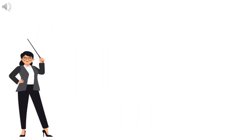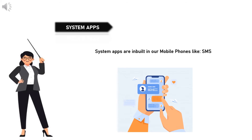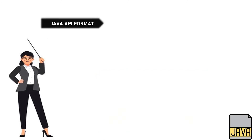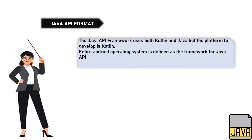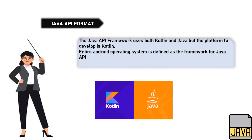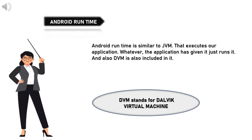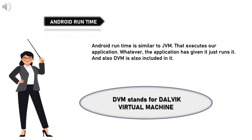System apps are inbuilt in our mobile phones, like SMS. User apps are apps we generally download from the App Store. The Java API framework uses both Kotlin and Java, but the primary platform to develop is Kotlin; the entire Android operating system is defined as the framework for Java API. Android runtime is similar to JVM — it executes our application, and DVM (Dalvik Virtual Machine) is also included in it.